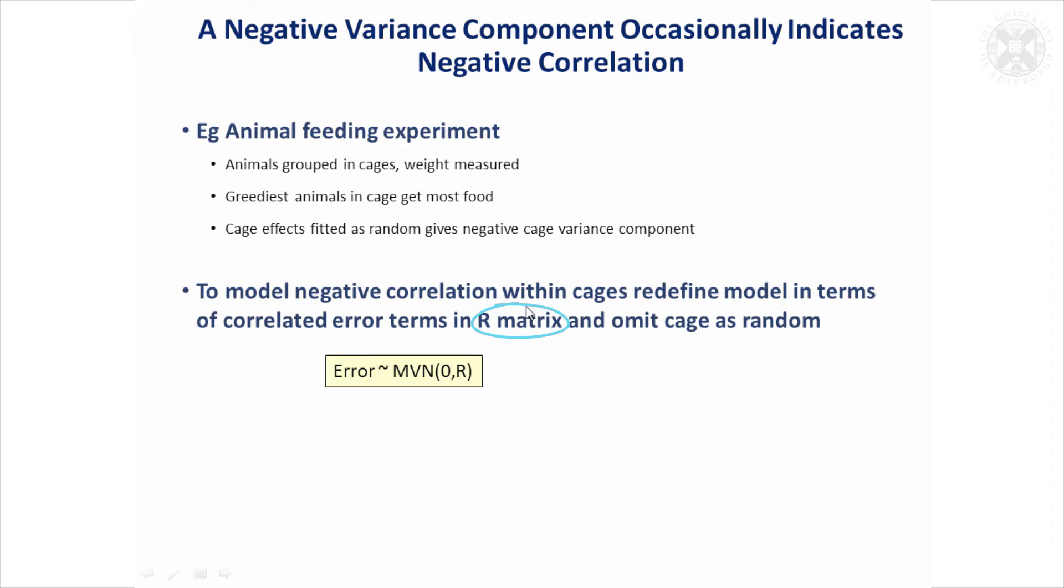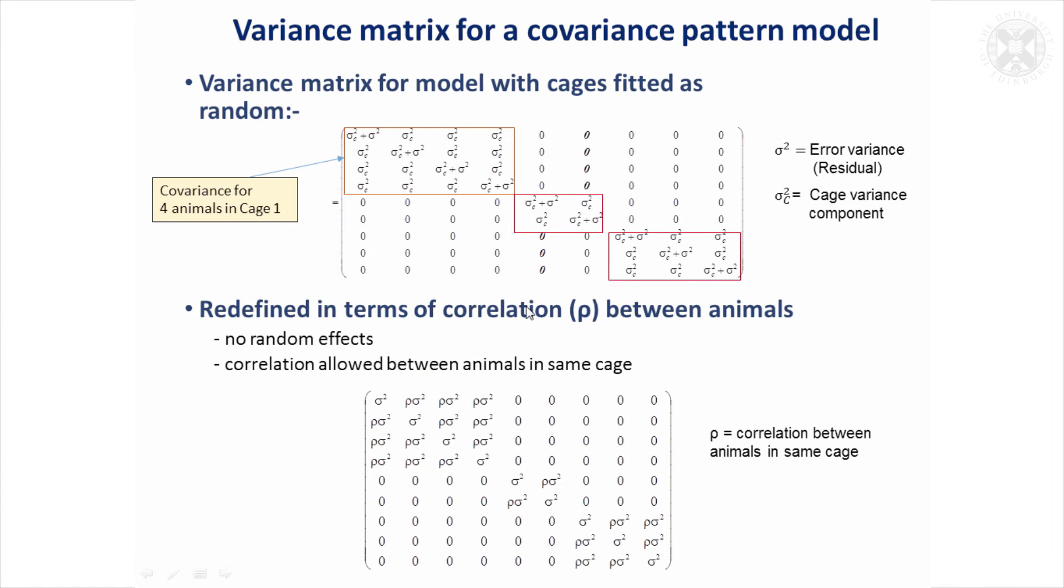It's a correlation, well a covariance matrix, and it would look something like this. So we've got the cage variance component plus the residual variance down the diagonal of the matrix, which is the overall variability between the animals. And this is the covariance between animals in the same cage, which is sigma c squared, and that's here, it's a variance component.